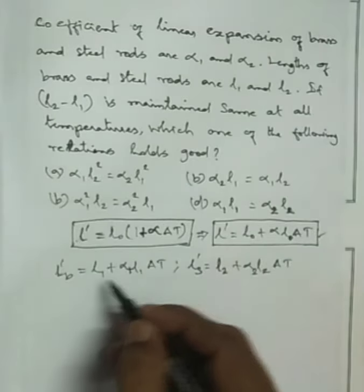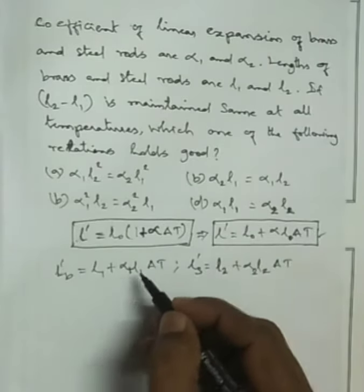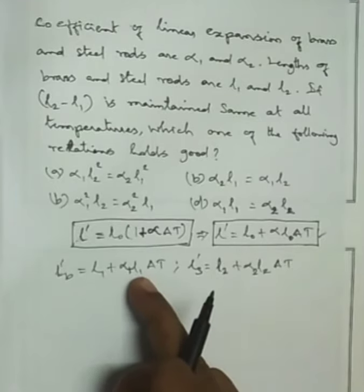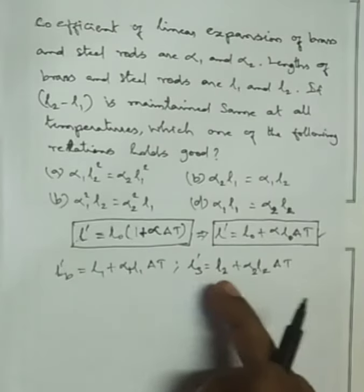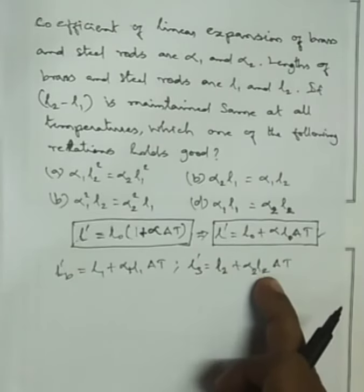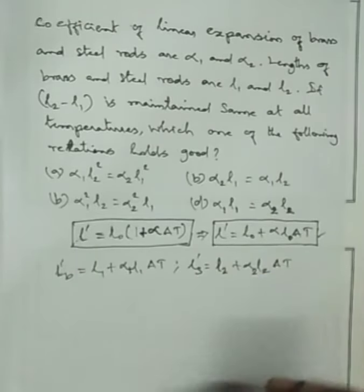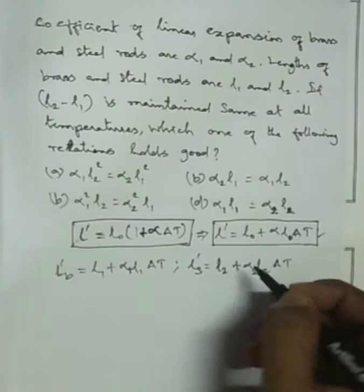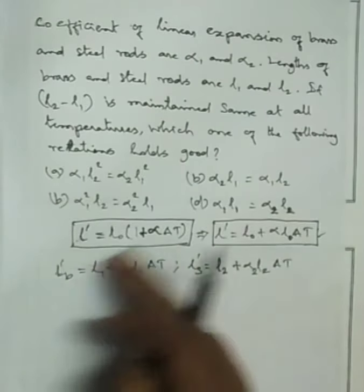Brass expanded length is L1 plus alpha1 L1 delta t. Steel expanded length is L2 plus alpha2 L2 delta t. This is the base formula.